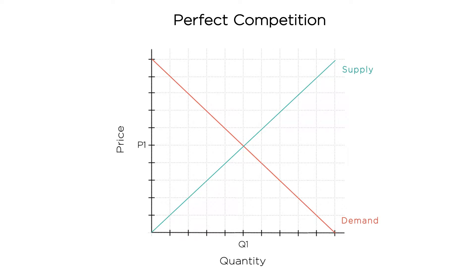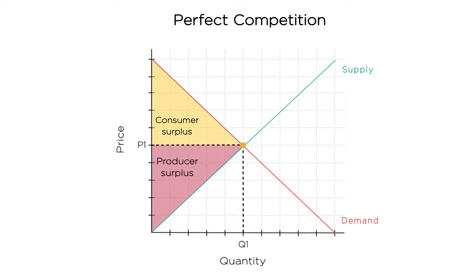Let's start with a market that's in competitive equilibrium. Here we have a supply curve and a demand curve intersecting to give an equilibrium price of P1 and an equilibrium quantity of Q1. The consumer surplus is this triangle, and the producer surplus is this triangle.